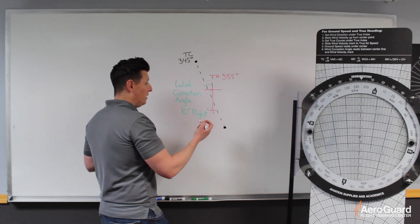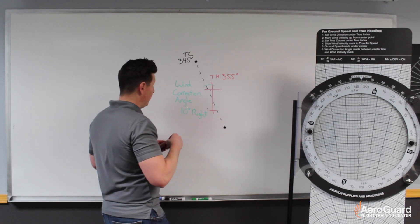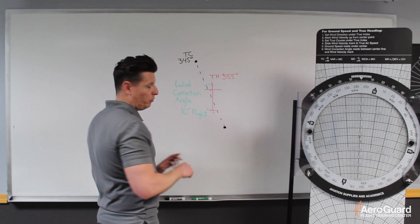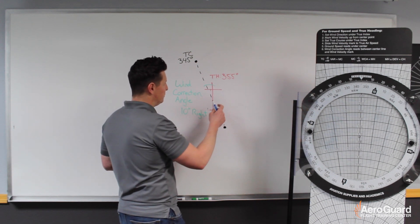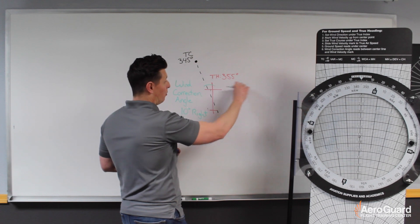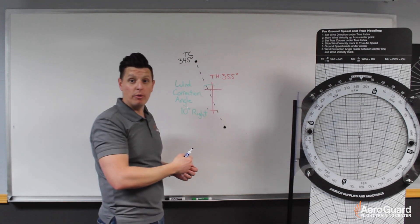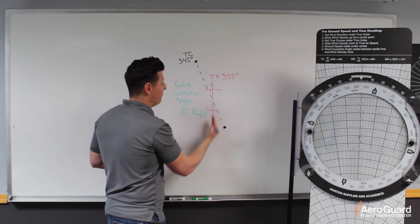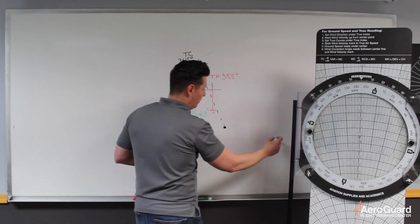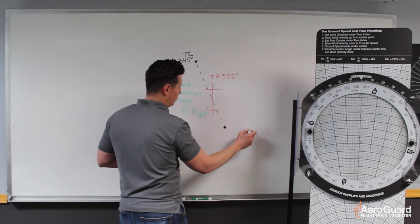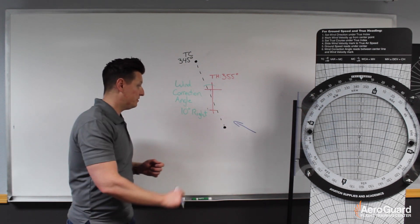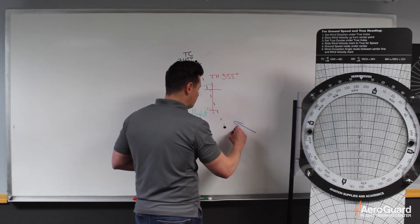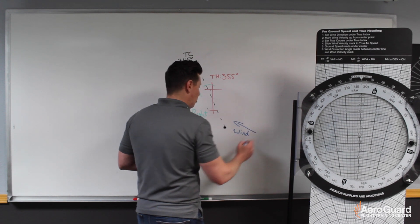What that means then is we must have a wind. We'll grab a different color here. We must have a wind that is A, coming from the right side, which is why we need the wind correction angle to the right, and B, kind of coming from our tail. So it's a wind that must be coming from a direction kind of from the east, southeast like this. So we already know approximately what this wind will be.